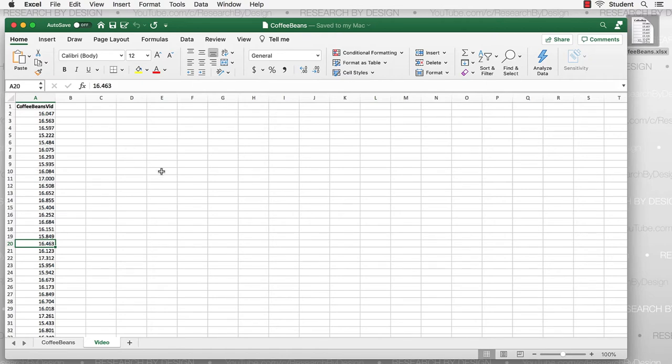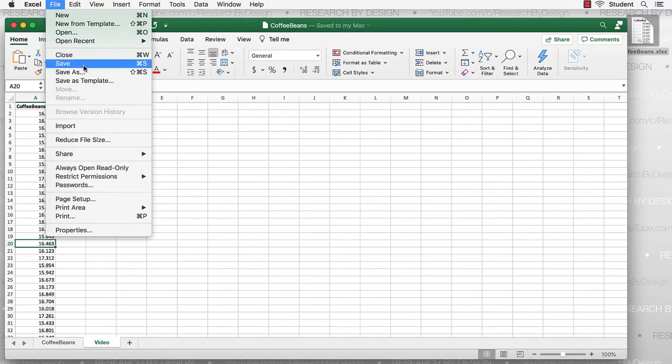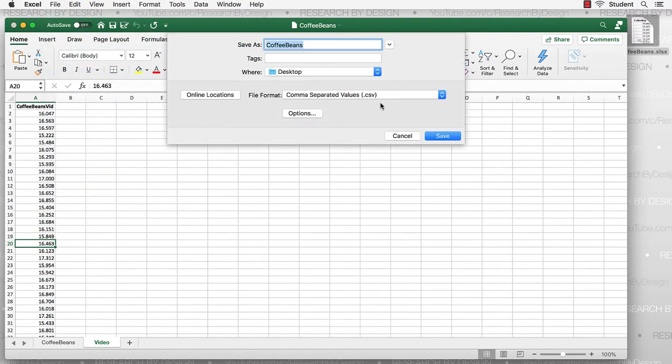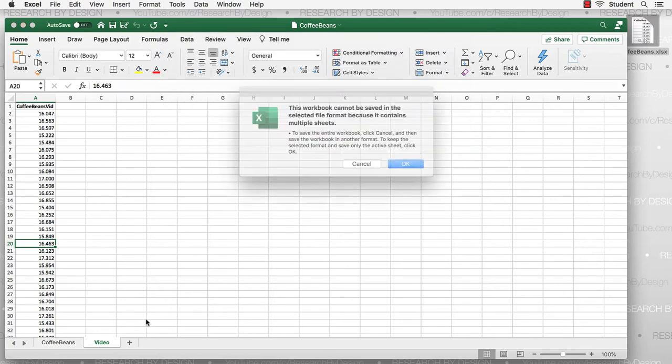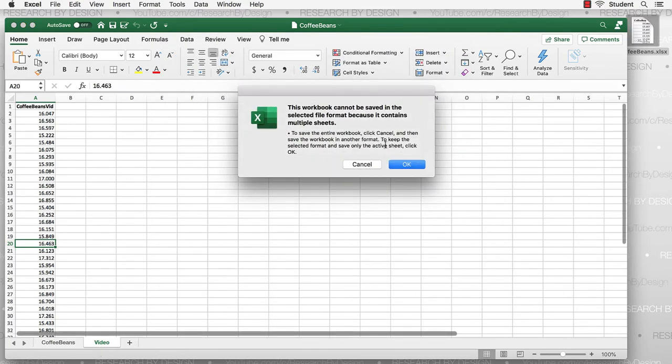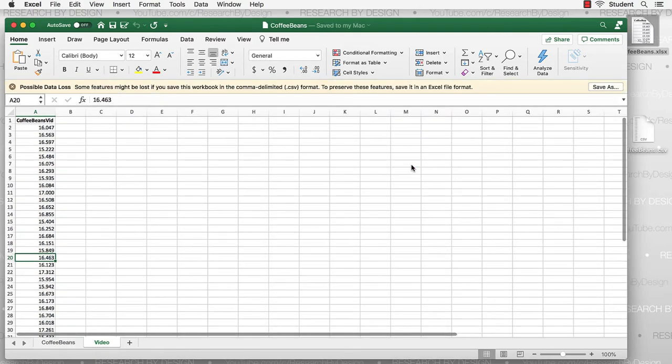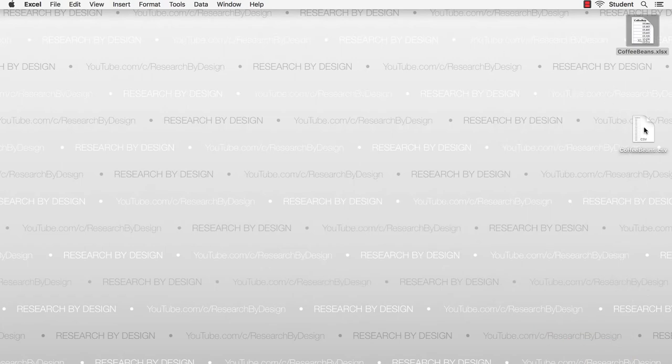But, because we're using JASP, we must first save our data as a comma separated values file, which I will save to the desktop as coffee beans. Because I have selected tab B, or the video tab, that is the set of data that will be saved as the CSV file. I can close out Excel and there's my data waiting for me on the desktop.